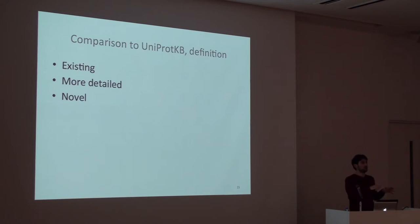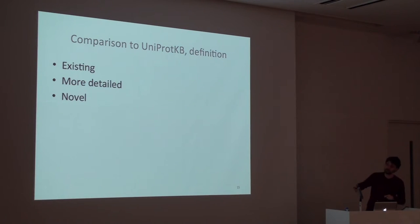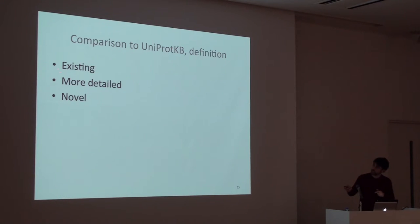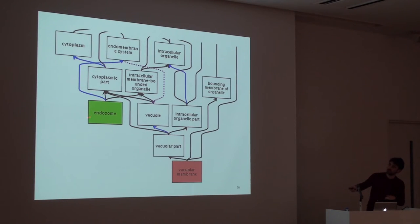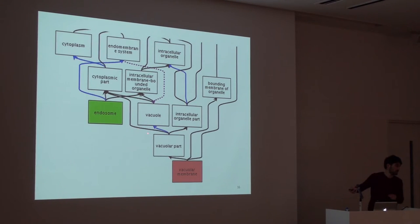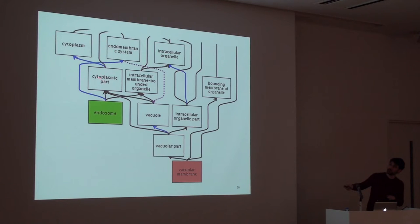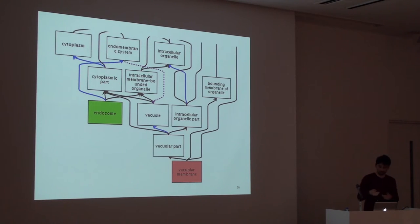Once we had the corpus of annotated documents, we compared the protein location annotations to UniProt. We made the distinction of whether our annotations were either existing in UniProt, more detailed than UniProt, or totally novel — new information not contained in UniProt. To make this distinction clear, here is a snapshot of the GO ontology tree. If we annotate endosome and UniProt only has vacuolar membrane, then endosome would be a novel annotation because the path doesn't go through endosome. If UniProt had cytoplasmic part and we had endosome, that would be a more detailed annotation. Otherwise it is an existing annotation already in UniProt.